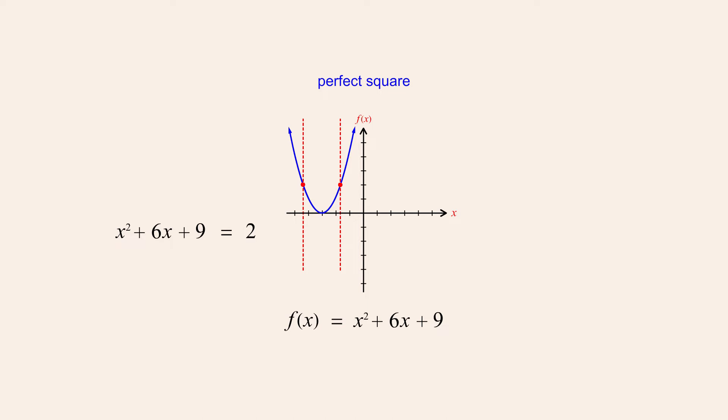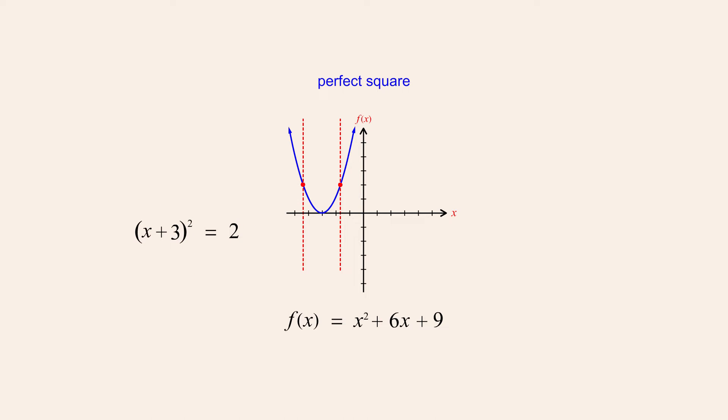But unlike the original equation, we now have a way to solve this equation. Since this quadratic expression is a perfect square, it can be written as the square of a single linear expression. And as we saw, the squared linear expression is x plus three. This equation can now be solved by taking the square root of both sides. And as we saw, since one side of the equation is the square root of a squared expression, the square root of the square can be eliminated as long as a plus or minus sign is added to the opposite side of the equation. We can then solve for x by subtracting three from both sides.